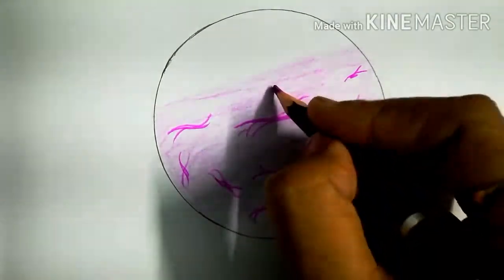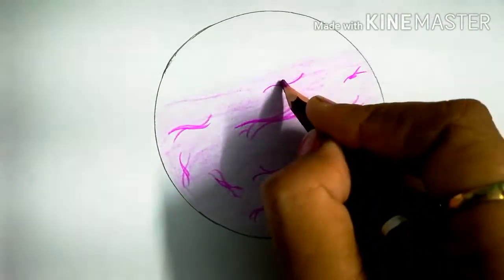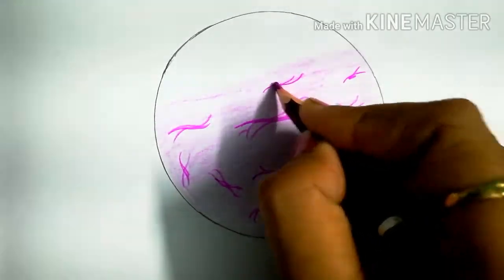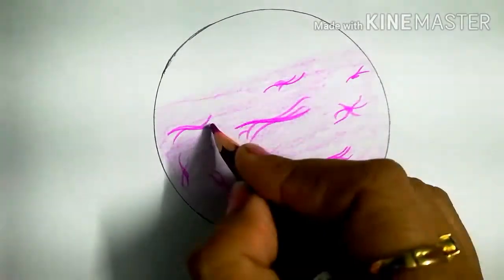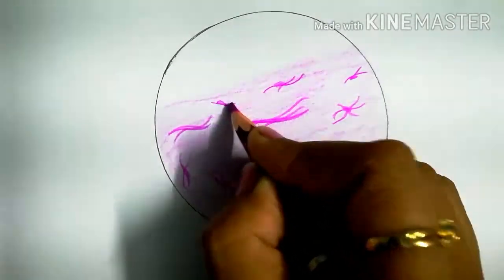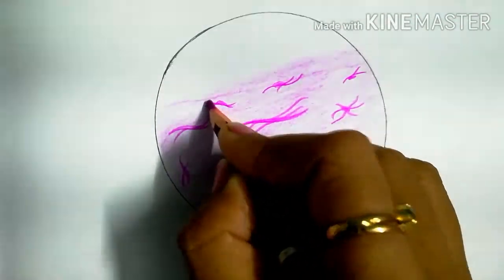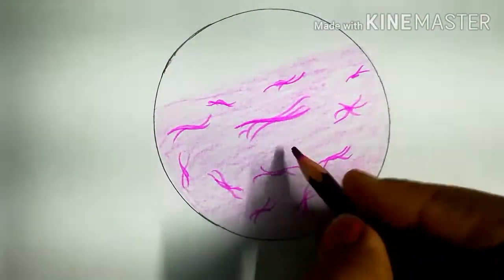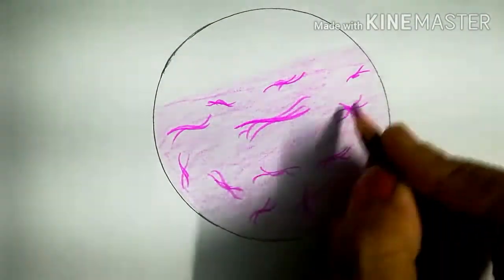These are the mesenchymal cells present in the embryonic type of connective tissue. That is in the Wharton's jelly of umbilical cord, in the vitreous humor of eye, in the pulp of dentins. Like this. And in between there are some capillaries.